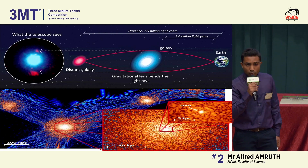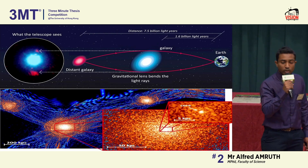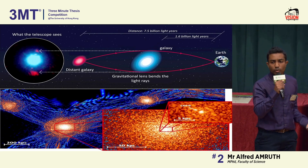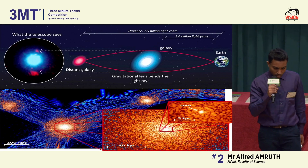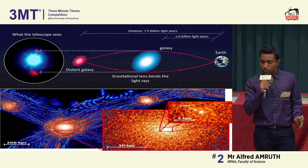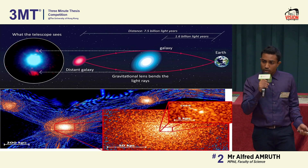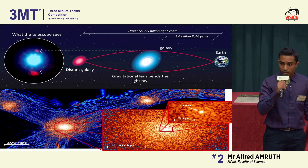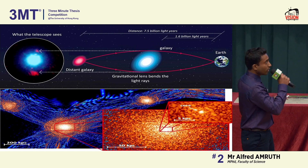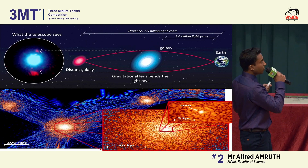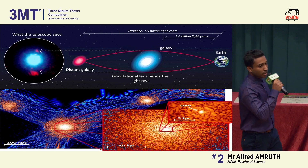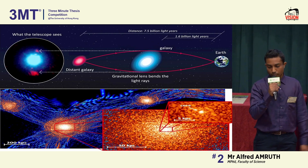So a new dark matter model was proposed: wave dark matter. It behaves like waves on a beach. When waves meet at the shore, they interfere with each other and produce complex patterns. In the same way, wave dark matter interferes at certain physical scales and produces these grainy-looking patterns, much like sand on a beach.